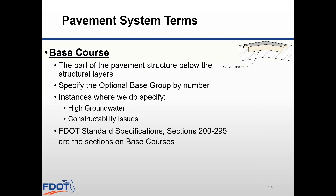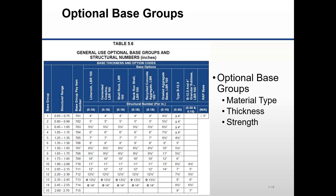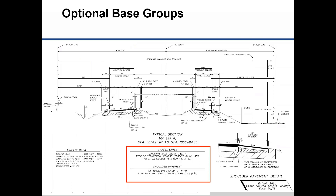Optional base groups are different base course materials that may have different thicknesses but are structurally equivalent, grouped together as shown in a table. In a pavement design, you might call out the use of optional base group 9, and the contractor would then select a material of the specified thickness from that group. For example, reading across optional base group 9, we can see that 10 inches of lime rock base with a structural number of 0.18 per inch provides a total structural number of 1.8, and likewise, 12 inches of graded aggregate base at 0.15 per inch also yields a total structural number of 1.8. In our plan set on the typical section sheet, we include our pavement design with thicknesses for friction course and structural course and simply call for optional base groups with no thickness specified.